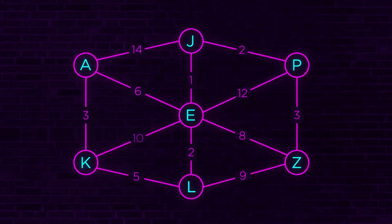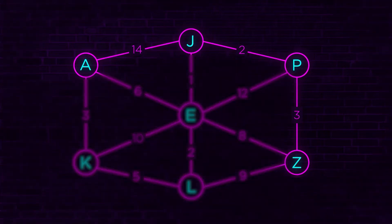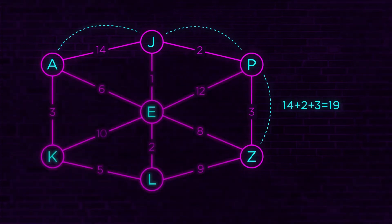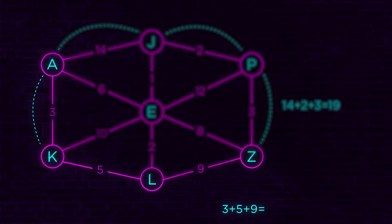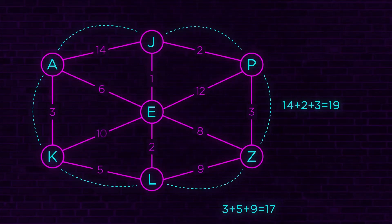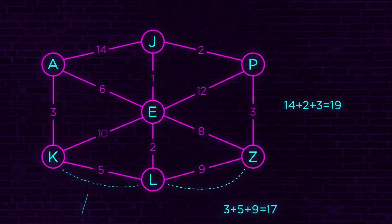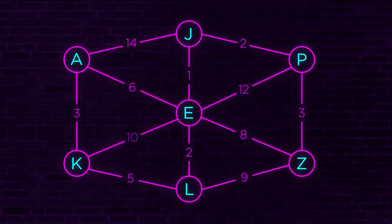The important thing to realize is these are just arbitrary numbers. While I've been talking, you've already started working out in your head what is the shortest path from A to Z. You might think A to J is 14 plus 2 plus 3 — that comes out at 19. Then you calculate another route: 3 plus 5 plus 9 equals 17, which is cheaper. But is that the cheapest? If you had hundreds of thousands of points, you couldn't do that in your head. That's why we need Dijkstra — that's why we need these algorithms.